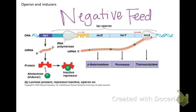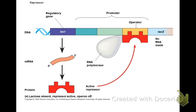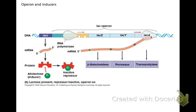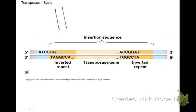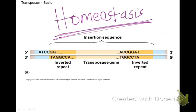Negative feedback is when a process in your body — like blood sugar goes up and your body brings it down, or your temperature goes up, you start sweating and your body brings it down. When you make enough lactose, you don't make lactose anymore. Just like ATP in glycolysis — when you make enough ATP, glycolysis stops. Write homeostasis beside negative feedback, because negative feedback is how your body maintains that stable state.